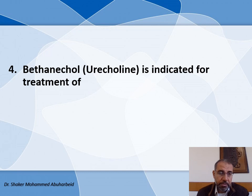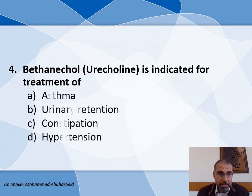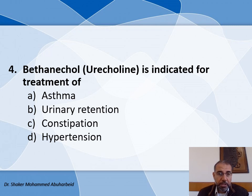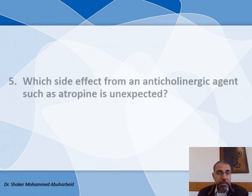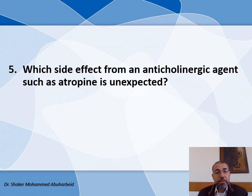The fourth question: Bethanechol is indicated for treatment of — the choices are: A) Asthma, B) Urinary retention, C) Constipation, and D) Hypertension. When we review the therapeutic effects and indications, the best answer is urinary retention — it is the main indication of Bethanechol.